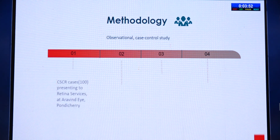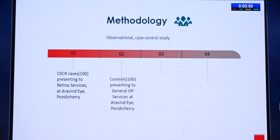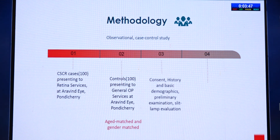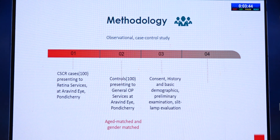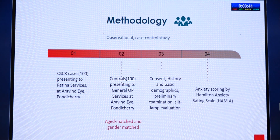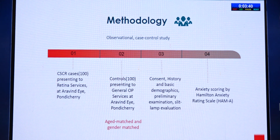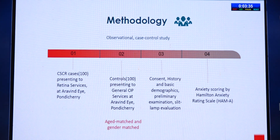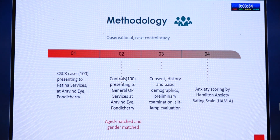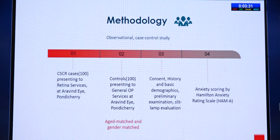We took 100 CSCR cases and 100 controls, which were age-matched and gender-matched. After taking consent, history, and basic demographics, anxiety scoring was done. The scale used was the Hamilton Anxiety Rating Scale, which was a validated questionnaire administered by a trained study coordinator.